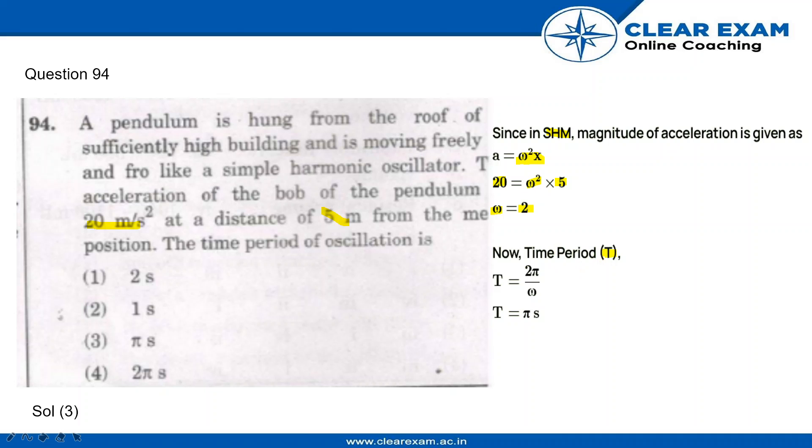Now when we are talking about the time period T, the formula to calculate the time period is 2π/ω. We just calculated the value of ω as 2, so 2 and 2 will cancel out and we are left with π seconds. Therefore, the correct answer is choice 3.